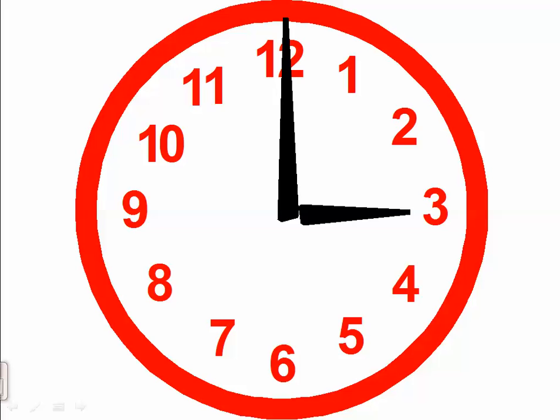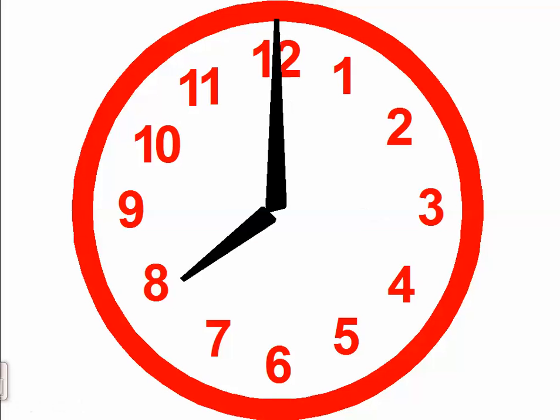Let's go to the next one, children. What is the time here? Now it's three o'clock. The next one: let's look at the long hand — the long hand points at twelve, so it says o'clock, and the short hand points at eight. So what is the time? Now it's eight o'clock.